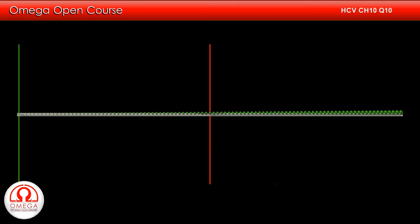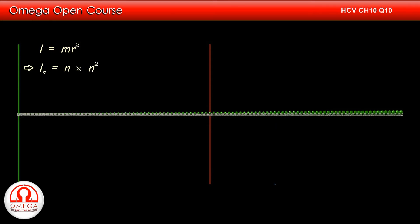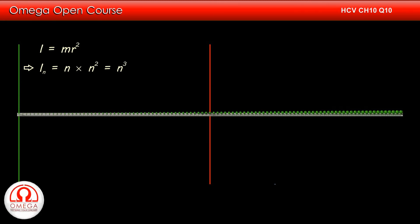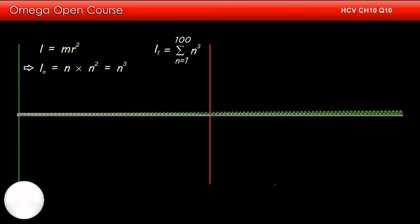Moment of inertia for a point mass is given by mass into square of distance. Thus the moment of inertia of the nth particle from the left about the axis is n into n² — that is n³. The unit of this moment of inertia is gram centimeter square. If we add the moment of inertia of all the particles, we will get the net moment of inertia. So the moment of inertia of the entire system about this axis is the summation of n³ from n = 1 to 100.